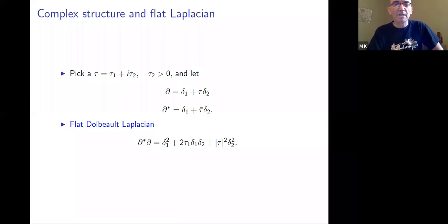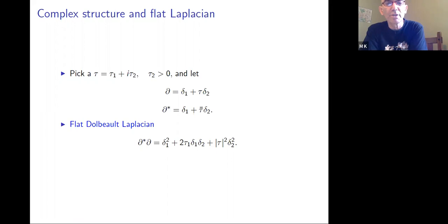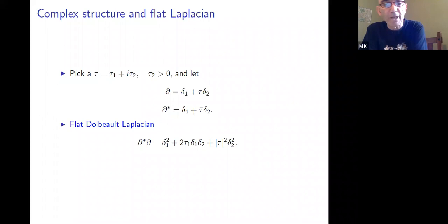Then the added structure came in the form of complex structure and the corresponding flat Dolbeault Laplacian. The complex structure, taking a clue from the classical situation, comes from taking a point τ in the upper half-plane and defining new Dolbeault operators: δ₁ + τδ₂ and its adjoint δ₁ + τ̄δ₂. If τ = i, you get exactly the del and del-bar operators of complex analysis for the usual torus or elliptic curve, but you can take any point in the upper half-plane. The corresponding flat Dolbeault Laplacian δ*δ is there.